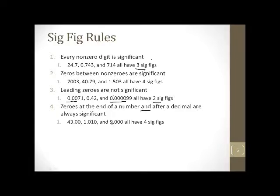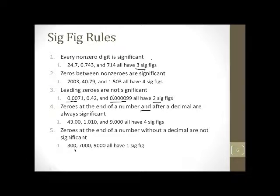Now, zeros at the end of a number without a decimal are not significant. So since there's no decimal here, there's only one significant figure. No decimal, only one. Let's say, however, I wrote 300 point. Well, since there's a decimal, this would have three significant figures. If I wrote 300 point zero, I would have four significant figures.